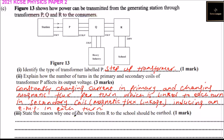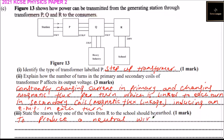Number three: state the reason why one of the wires from R to the school should be at zero potential. The two wires connected to the school include a neutral wire, which is at zero potential.